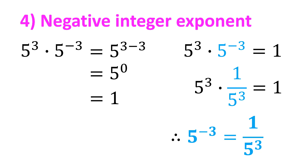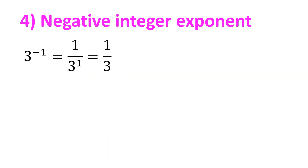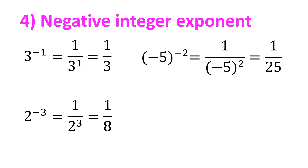This leads us to the following definition: any non-zero number b raised to negative n, where n is a positive integer, is equal to 1 over b raised to n. For example, 3 raised to negative 1 equals 1 over 3 raised to 1 equals 1 third. 2 raised to negative 3 equals 1 over 2 raised to 3 equals 1 over 8. Negative 5 raised to negative 2 equals 1 over the square of negative 5, equals 1 over 25. But take note that 0 raised to a negative integer is undefined.